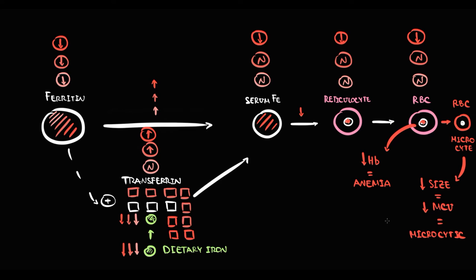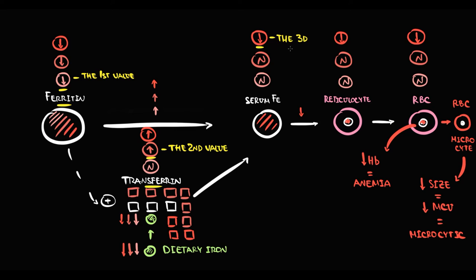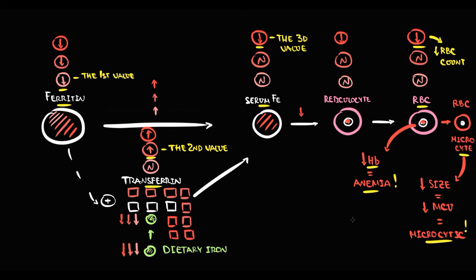So with iron deficiency, the value that becomes affected first is decreasing ferritin. The next marker to react is increasing transferrin iron binding capacity. Only after that does serum iron decrease, and only with decreasing serum iron does anemia develop, along with decreased red blood cell count and microcyte production. Therefore, the most precise marker to diagnose iron deficiency is ferritin.